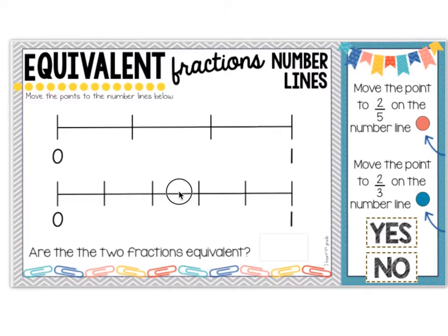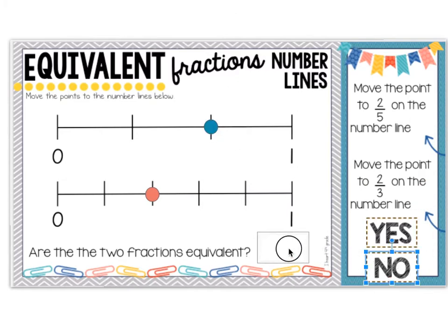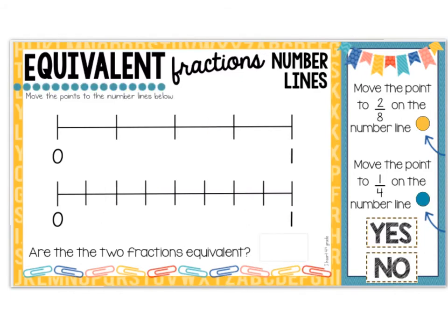Here is an example of what the students will see on their screens. This task card is asking if the fractions two-fifths and two-thirds are equivalent. The students will have to move the points to two-fifths and two-thirds, and from here they can determine if the fractions are equivalent. Since both of the fractions are not lined up, the student knows that no, these fractions are not equivalent.